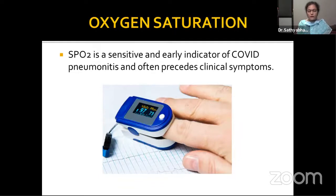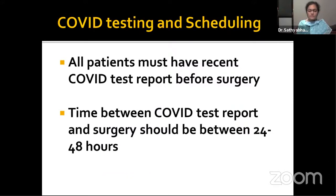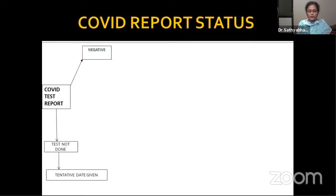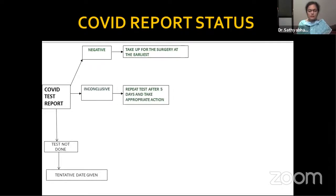An exception is a child where RT-PCR is done instead of CT chest and surgery is deferred for two weeks if possible, even if RT-PCR is negative. All patients must have a recent COVID test report before surgery; the time between the COVID test and surgery should be between 24 and 48 hours. After COVID testing, the patient is strictly instructed to isolate at home until surgery. If a patient comes with a COVID-negative report, admit to a non-COVID ward and perform surgery at the earliest, treating them as potentially positive due to high false-negative rates.